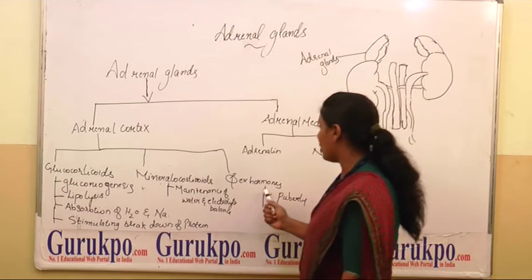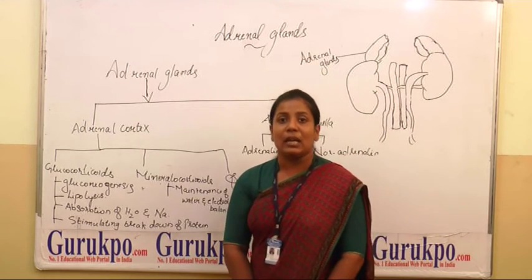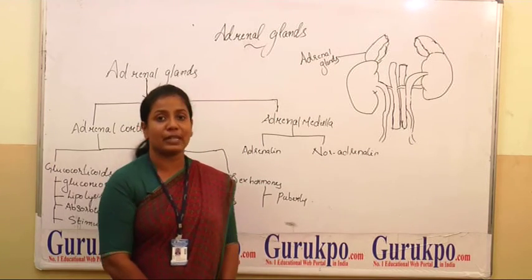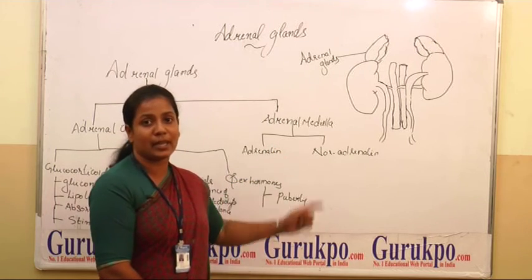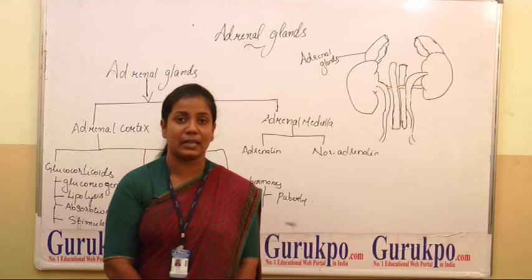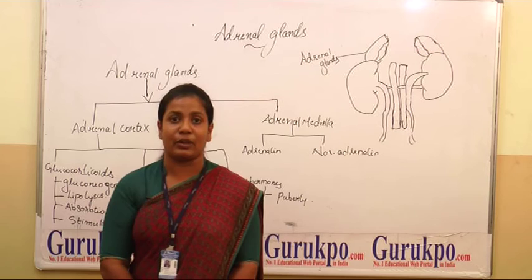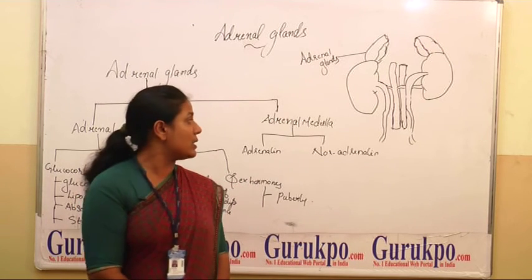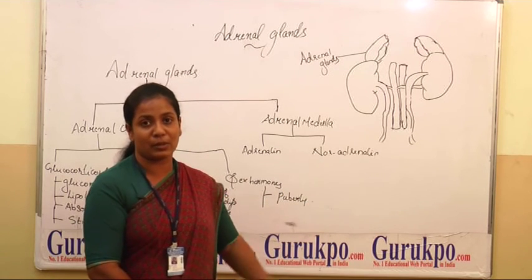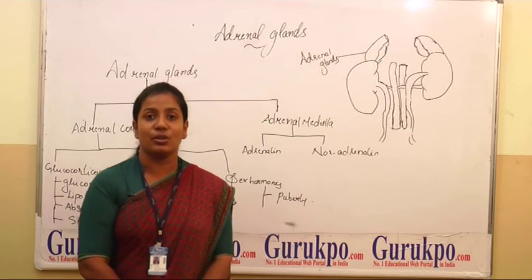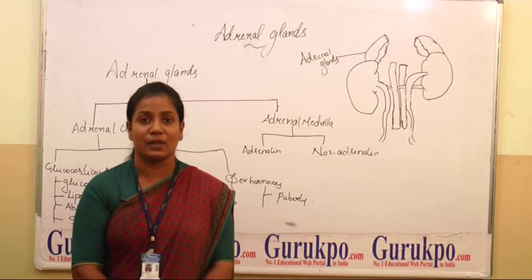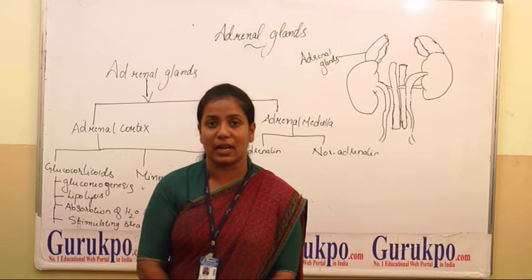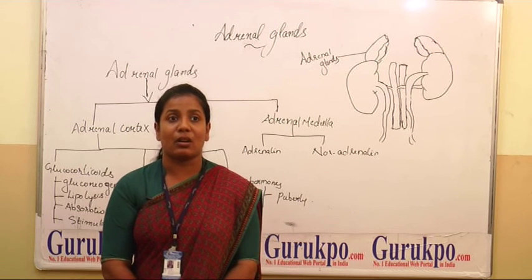The next hormone group is sex hormones; the example is androgen. Their function is not yet fully clear, but they are helpful at the time of puberty. Now, the adrenal medulla is the second part. The adrenal medulla secretes two hormones: adrenalin and non-adrenalin, also known as epinephrine and norepinephrine. Both are neurotransmitters synthesized and stimulated by the sympathetic nervous system of the autonomic nervous system. Together, these hormones produce responses such as increased heart rate, increased blood pressure, and increased metabolic rate, as well as absorption of water and sodium.